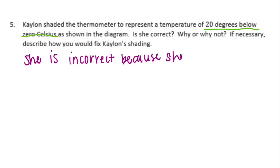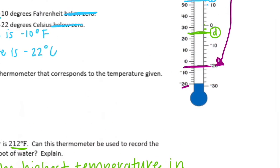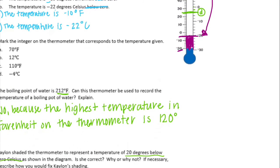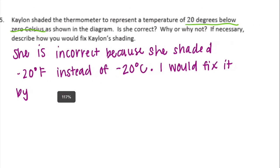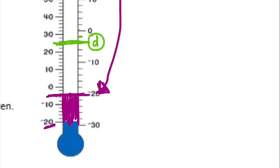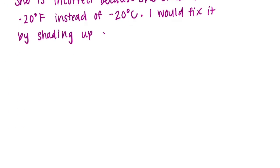She is incorrect because she shaded negative 20 degrees Fahrenheit instead of negative 20 degrees Celsius. To fix Caitlin's shading, I would shade it up about 10 more degrees to reach negative 20 degrees Celsius on the correct Celsius side of the thermometer.